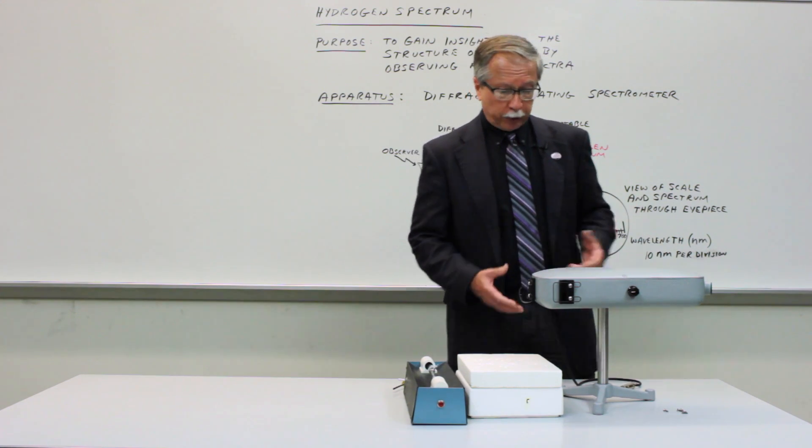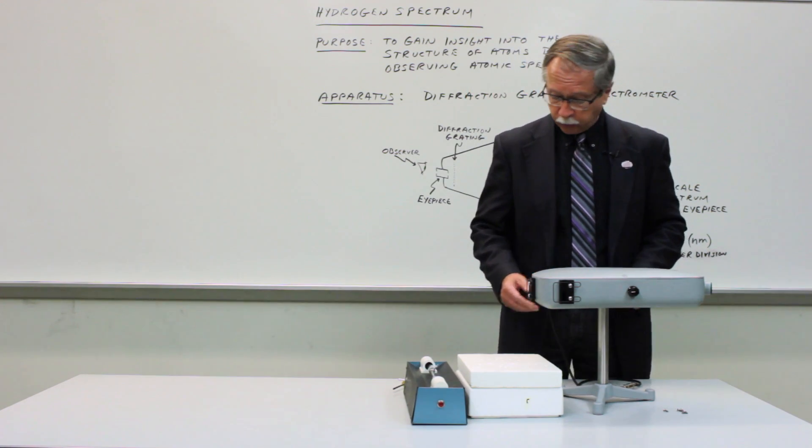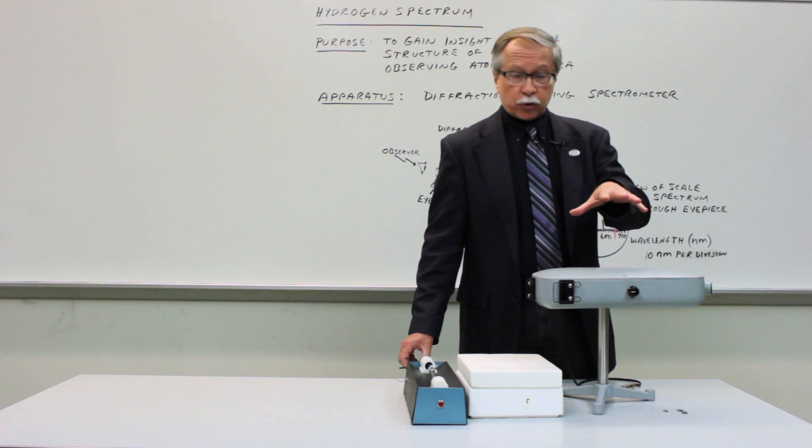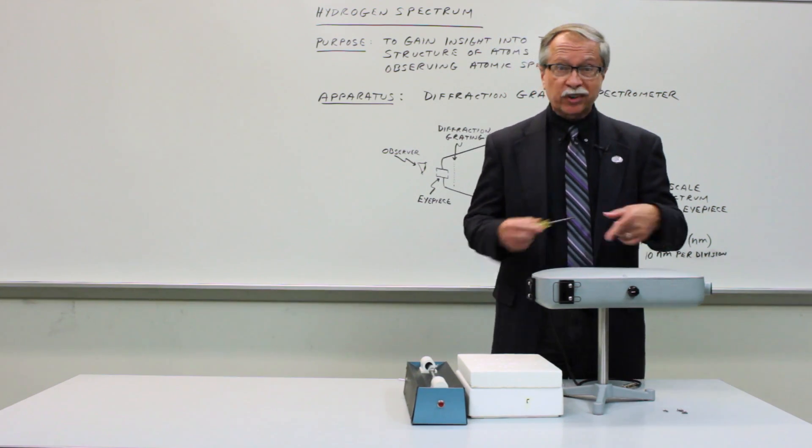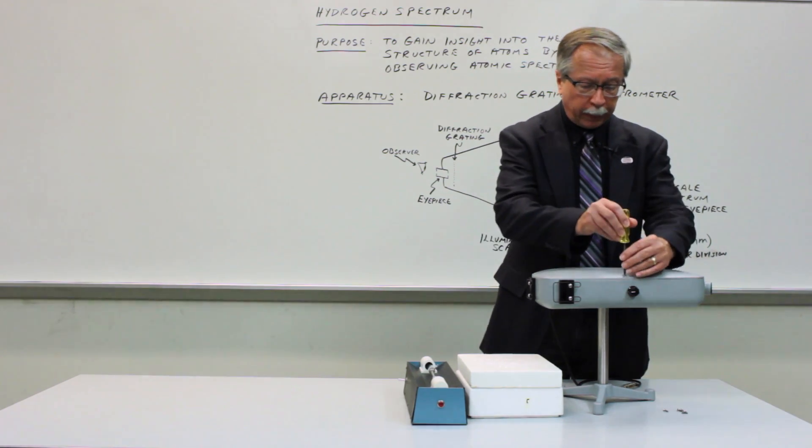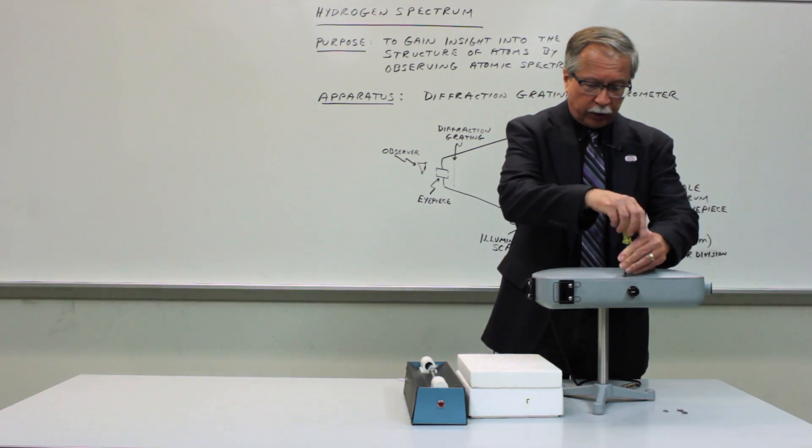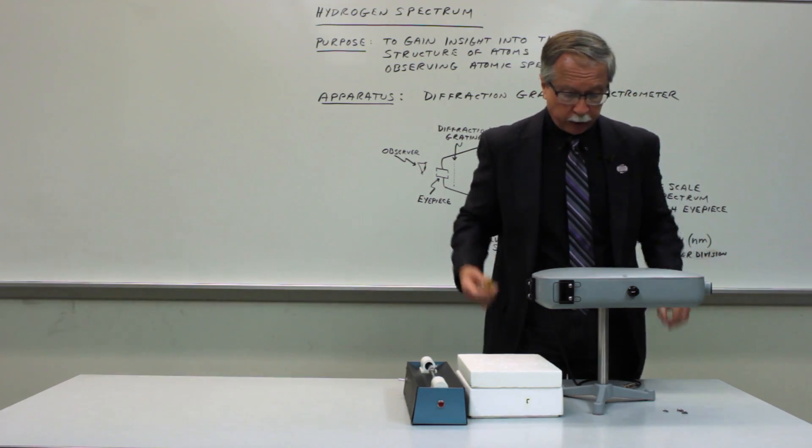So this is the grading spectroscope, and you'll find it just like this when you come into the lab. What I'd like to do is to remove the top so that you can see the various components of the instrument and understand what their functions are. So I'll just take out the screw and show you what's inside.